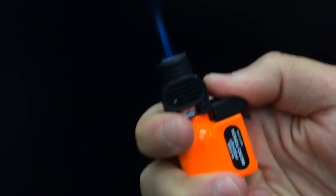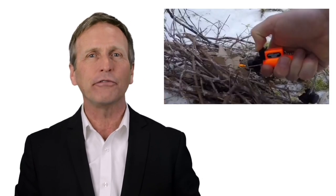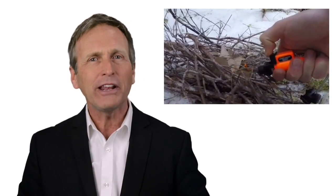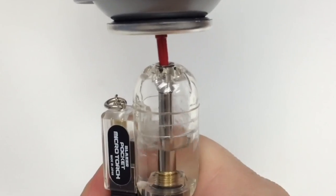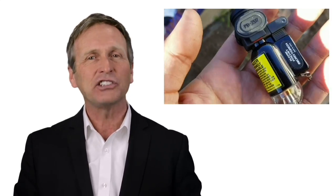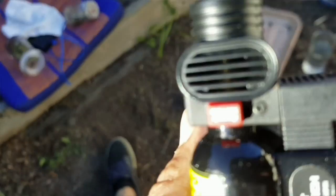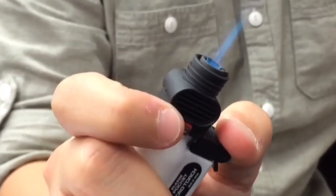This small yet powerful tool features a wind-resistant 2,500-degree Fahrenheit torch flame, the largest fuel tank available in a pocket torch lighter, a safety cap, and a locking lever for applications where a continuous flame is required.